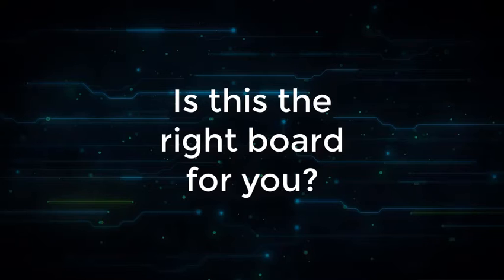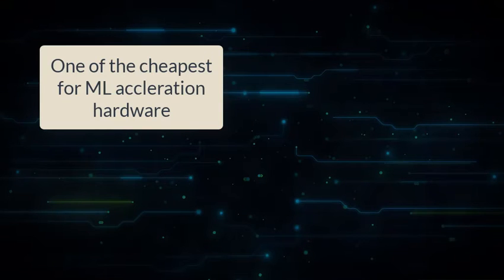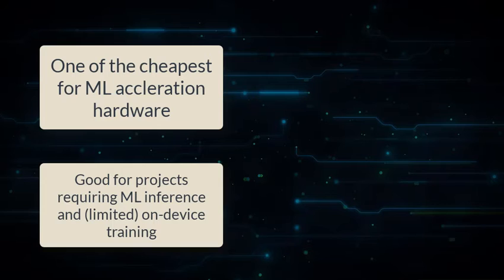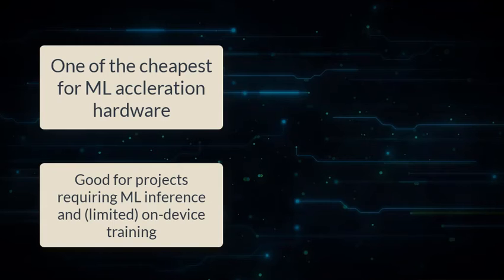The third question is: should you buy the NVIDIA Jetson Nano developer kit? Is it the right board for your application? It's definitely one of the cheapest available system on module boards plus developer kit packages at just $99. If your project requires machine learning applications like image recognition, image segmentation, or object detection, it can run many different algorithms — which we'll see in detail later. So if your project requires that, I would definitely consider looking at this board and testing it.